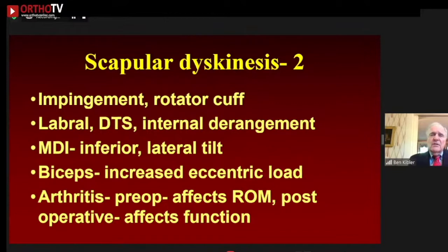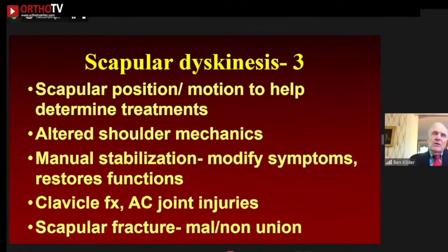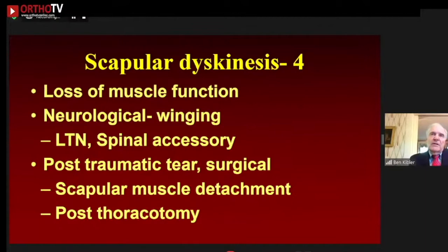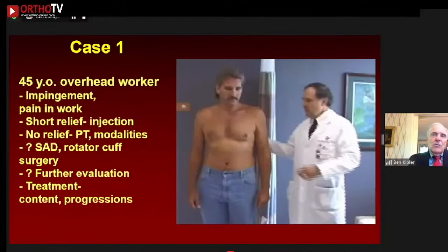Many diagnoses involve scapular dyskinesis: impingement, rotator cuff problems, internal derangements of the shoulder joint, multidirectional instability, biceps tendinopathy, arthritis both pre and post-op. The third way dyskinesis affects shoulder function is that you can use it to help determine treatments for anatomic injuries such as fractured clavicle or high-grade AC joint injury — the loss of strut function tells you the scapula is involved and mechanics are not right. Finally, neurological problems — long thoracic nerve injuries, accessory nerve injuries, and scapular muscle detachment — are all causes of scapular dyskinesis.